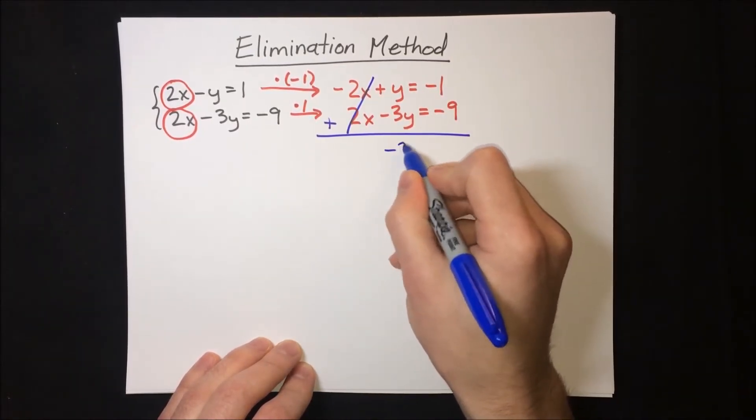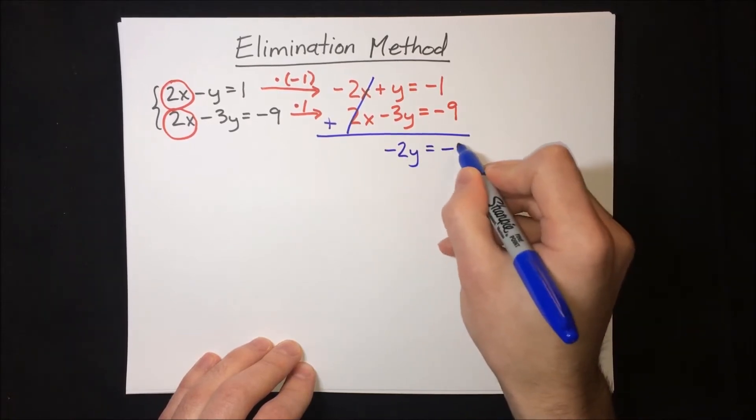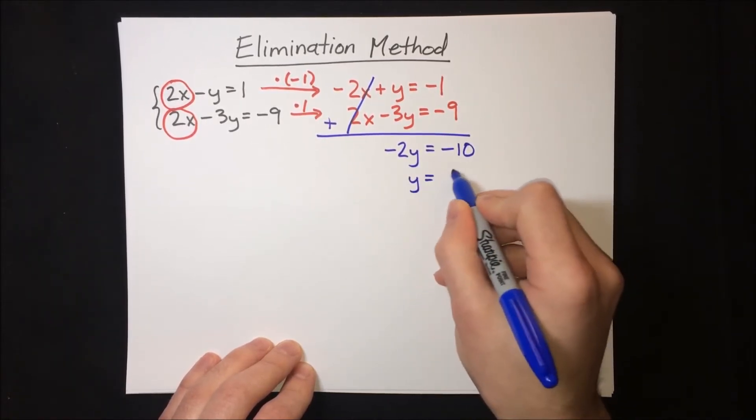And we're left with negative 2y equals negative 10. Solving for y, we find that y equals 5.